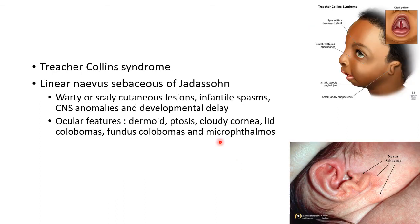Ocular features of Goldenhar syndrome include dermoid, upper lid notching or coloboma, microphthalmos, and disc coloboma. Another systemic association is Treacher Collins syndrome, with features including limbal dermoid, downward-slanting eyes, small flattened cheekbones, small steeply angled jaw, small oddly shaped ears, and cleft palate.